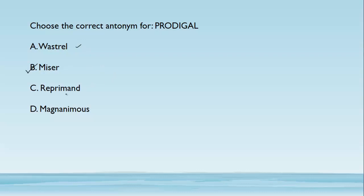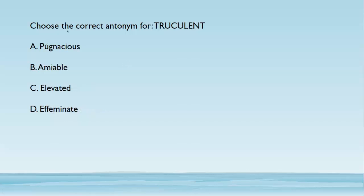'Reprimand' means to scold or censure someone, and 'magnanimous' means someone who has a very big heart and is very generous toward others. The correct antonym for prodigal is 'miser.' Let's move forward.